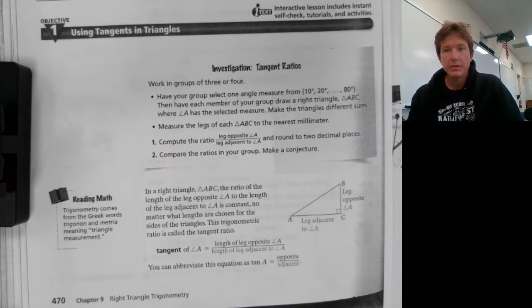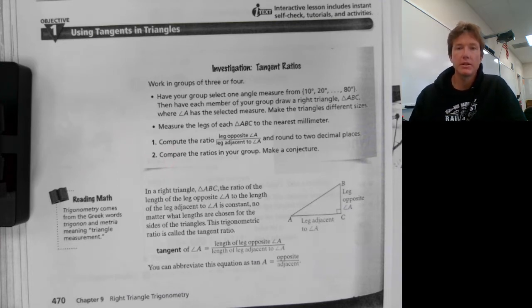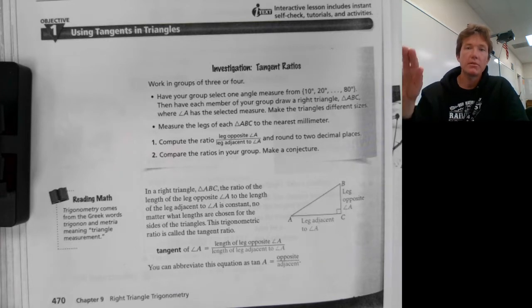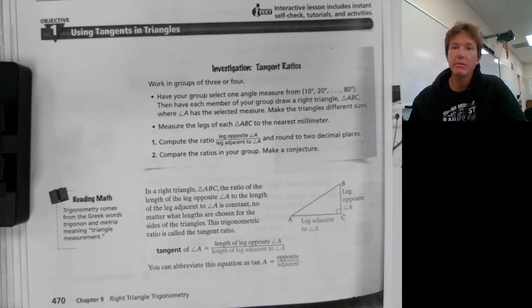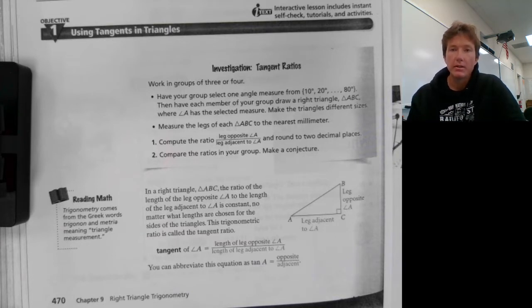The first is tangent. Tangent is described as the opposite side over the adjacent side. It's a ratio. It can be greater than one, or it could also be less than one.